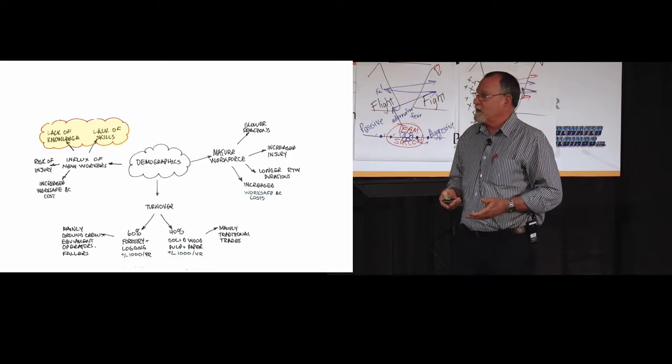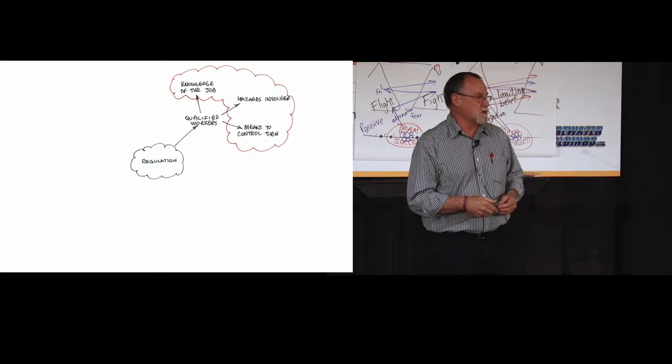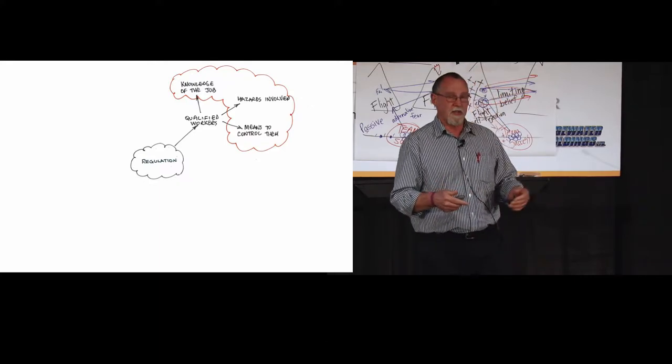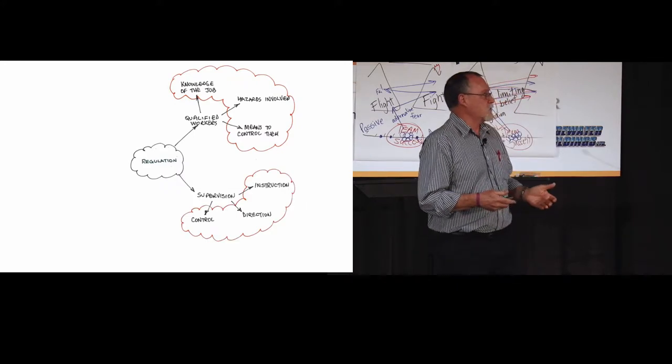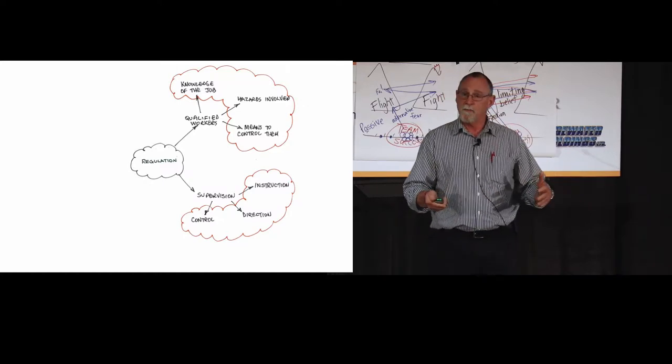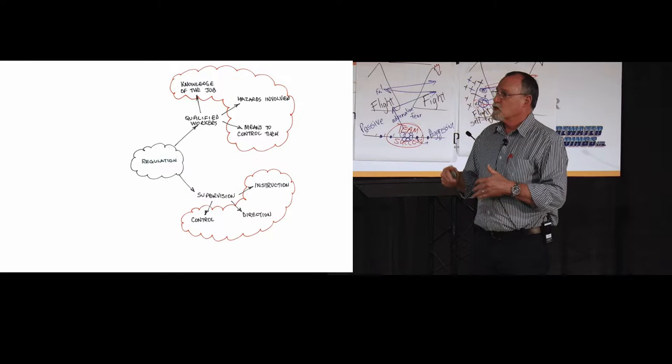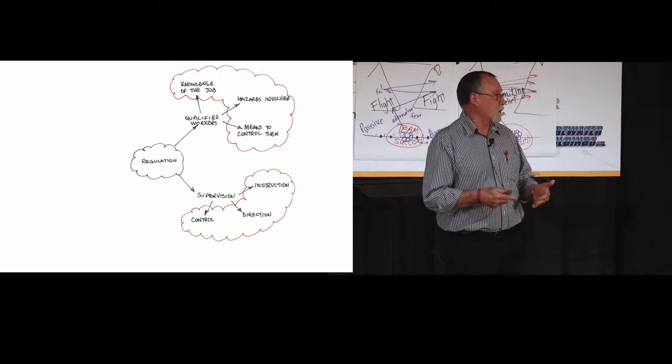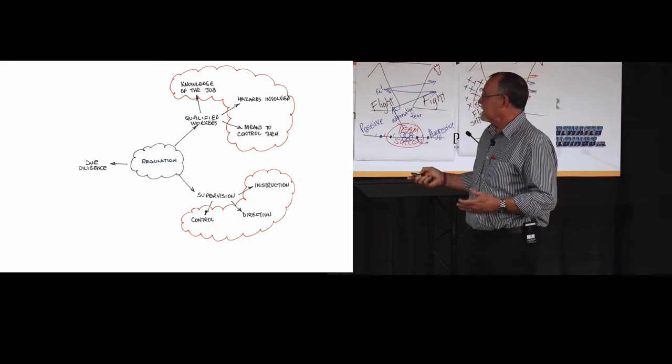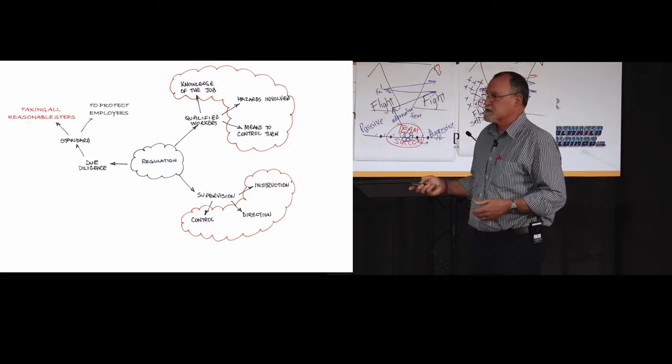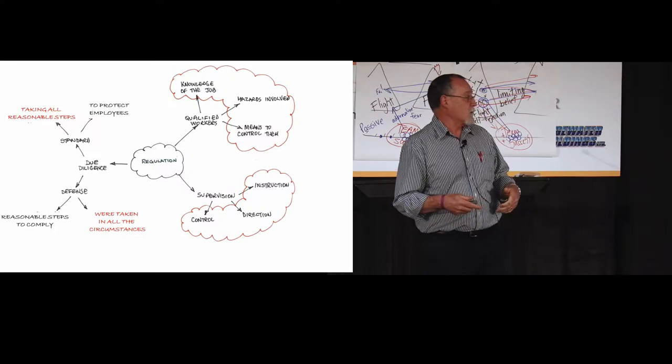So, you also heard this morning about regulation. This is a quick recap. Qualified workers - the definition of a qualified worker is a person who has the knowledge of the job, the hazards involved, and the means to control them through education, training, or experience, or a combination. Supervision - you also heard about that this morning. This is a person who provides the instruction, direction, and control. You also heard about supervisory systems. But the actual function of the supervisor working with qualified workers, providing that instruction and direction to make sure that they're qualified, that they're knowledgeable of the job, the hazards involved, and the means to control them.